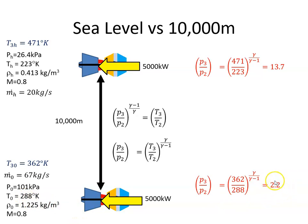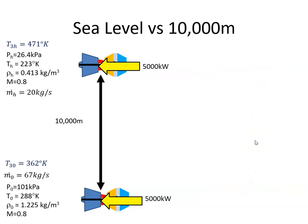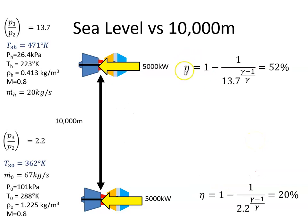The efficiency then of the engine, the efficiency of an engine is one minus one over the pressure ratio to the power of gamma minus one over gamma. So the pressure ratio here is 13.7, the pressure ratio here is 2.2. That gives me an overall engine efficiency of 52% and down here of 20%.